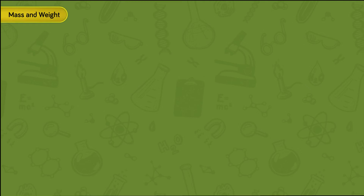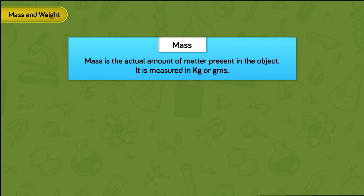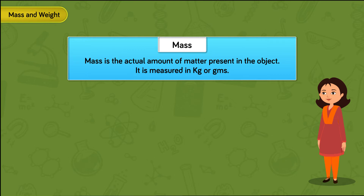Let's understand the concept of mass and weight in detail. Mass is the actual amount of matter present in the object. It is measured in kilograms or grams. For example, the mass of the girl shown here is 56 kilograms.